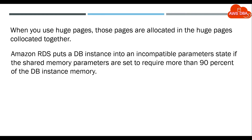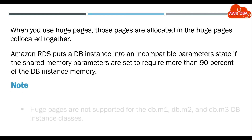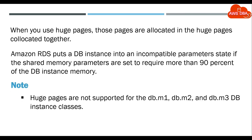Amazon RDS puts a DB instance into an incompatible parameters state if the shared memory parameters are set to require more than 90% of the DB instance memory. Note: Huge Pages are not supported for the db.m1, db.m2, and db.m3 DB instance classes.